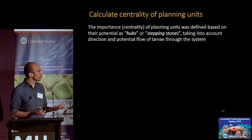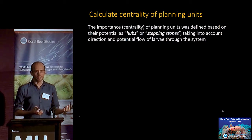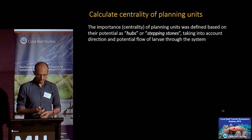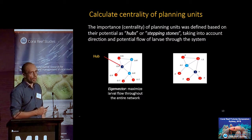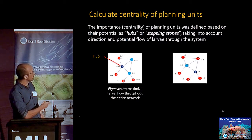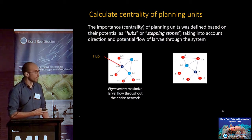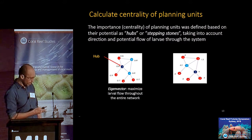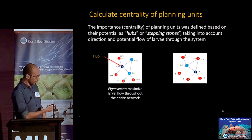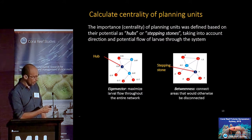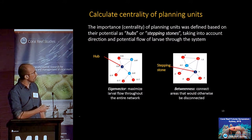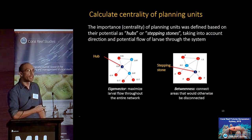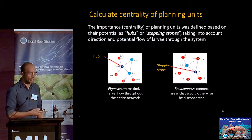The theoretical network approach we followed essentially identifies how important different planning units across the landscape are in terms of how central they are for maintaining the connectivity of the whole system. We used a concept of identifying areas that are potential hubs or stepping stones. A hub is a planning unit important for maintaining the overall flow of larvae across the network — we tested a few measures and decided to use eigenvector centrality. The other measure was betweenness — identifying areas important to maintain connectivity of sites that would otherwise be disconnected from the network.